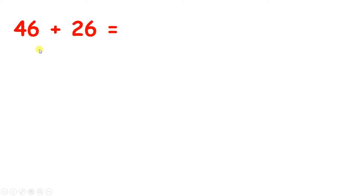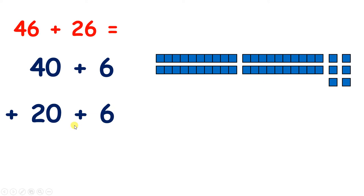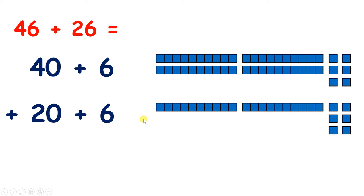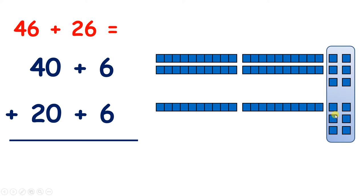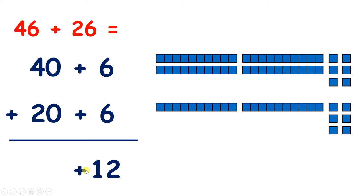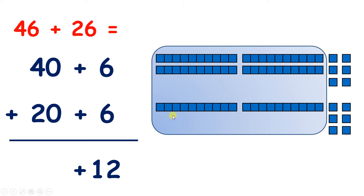Now this question is actually a little bit trickier, and we'll see why it's a bit more difficult in a moment. How can we partition 46 and 26? Well, we have 40 plus 6, because we have 4 tens and 6 units. And we have 20 plus 6, because we have 2 tens and 6 units. Looking at the units, I can see that we have 6 plus 6, which is 12. So now we need to add our tens: 4 tens plus 2 tens, or 40 plus 20, which is 6 tens, or 60.